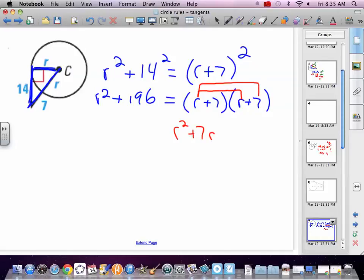7 times R. 7R. 7 times 7. 49. You're just distributing the R to both things and the 7 to both in the next one. Combine like terms.